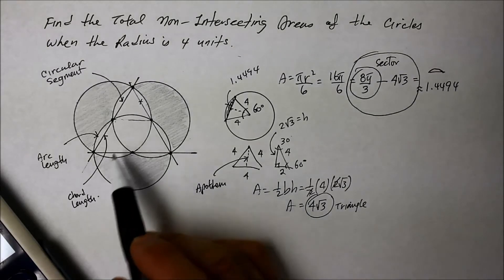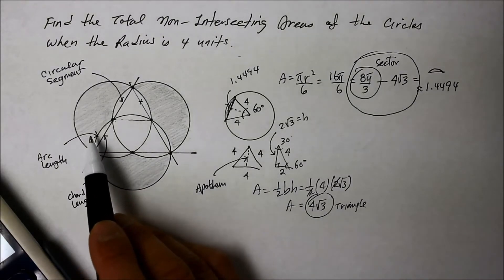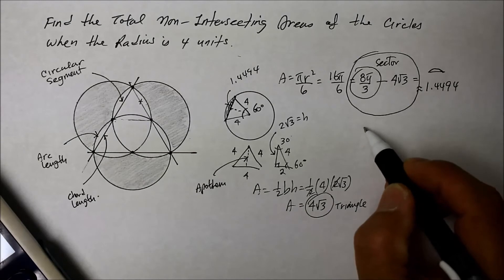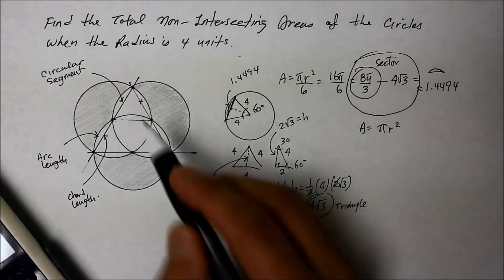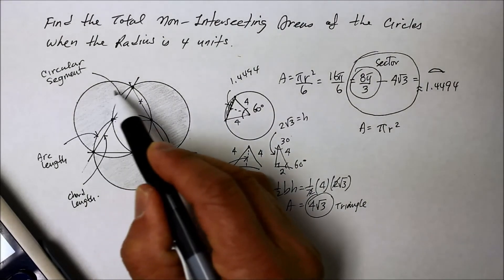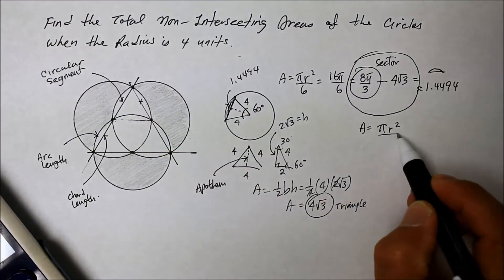So let's find the area of the semi-circle. So area of a circle is pi r squared. But we don't want the whole thing, we just want half of it. So divide that by 2.